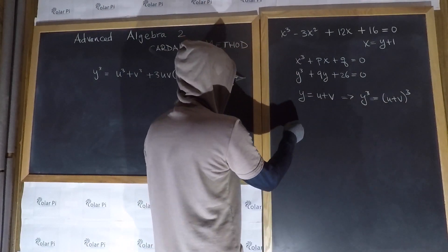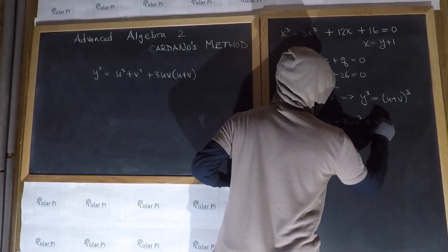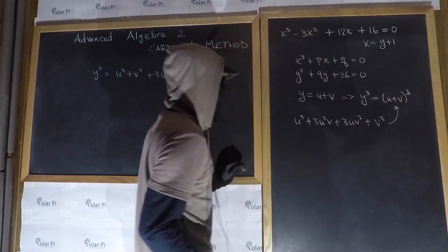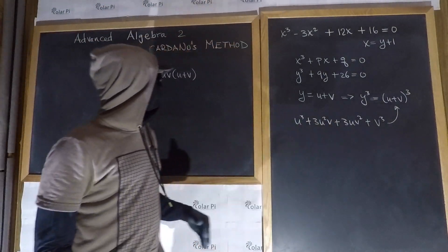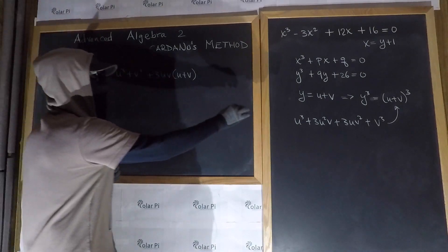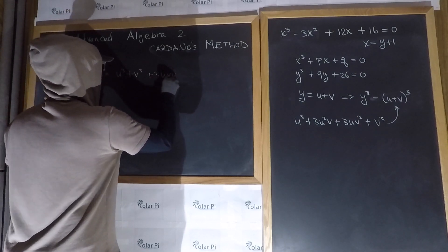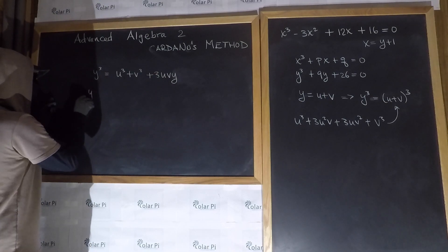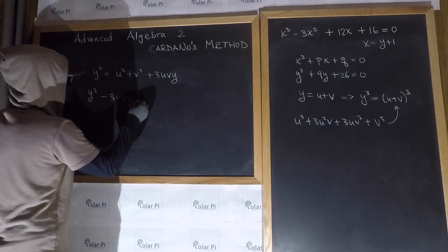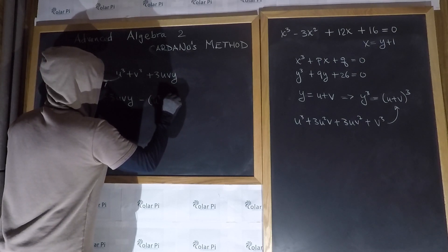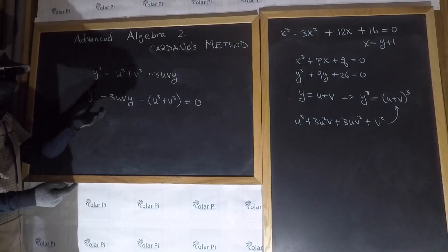(u+v)³ is really u³ + 3u²v + 3uv² + v³. I can put the u³ and v³ first, and then factor out a 3uv from the middle two terms, and I'll have this. Well, I like this because y = u+v, so instead of u+v here I could just write y. And then if I move everything to the left side, I could write y³ - 3uv·y - (u³ + v³) = 0.